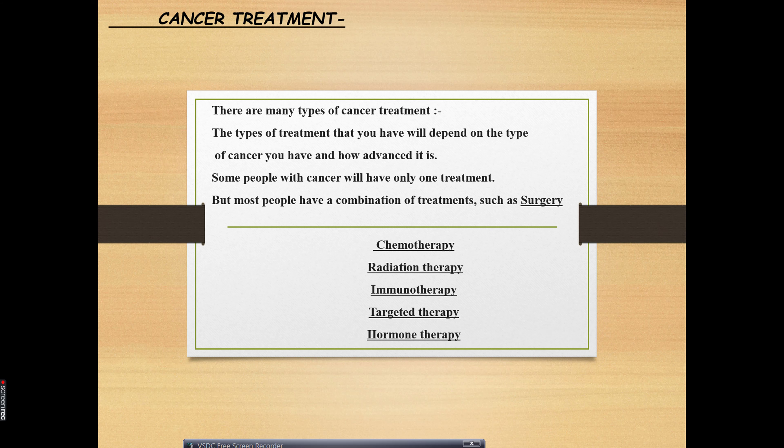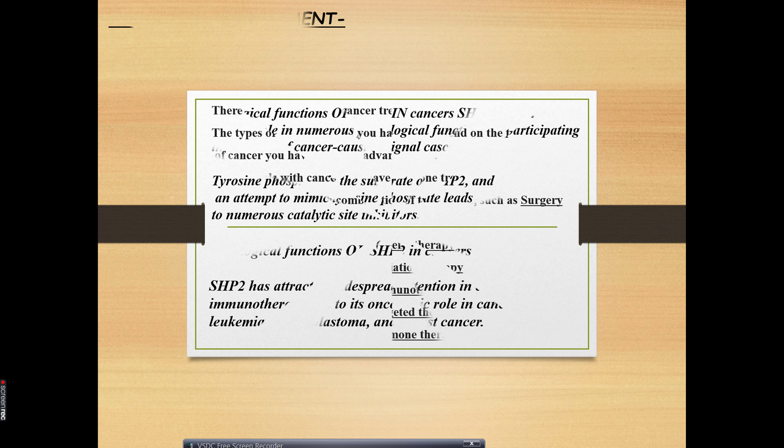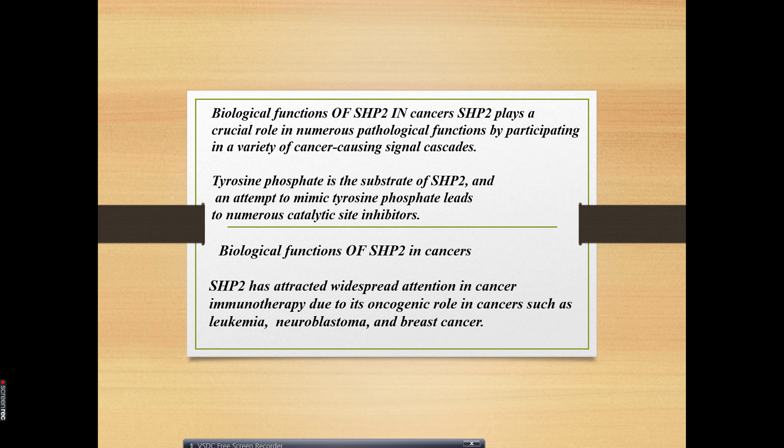I have taken SHP2 inhibitor in cancer cells. The basic substrate SHP2 attempts to mimic tyrosine phosphatase, leading to numerous catalytic site inhibitors. You have to mention each and every point about the biological functions of SHP2 inhibitors in cancer.